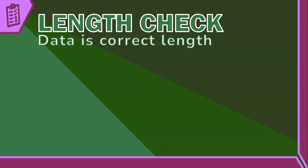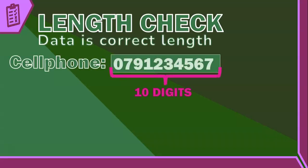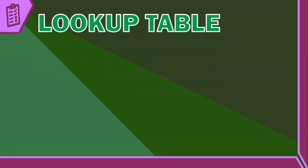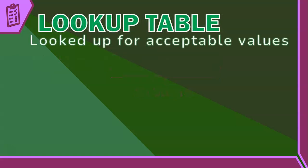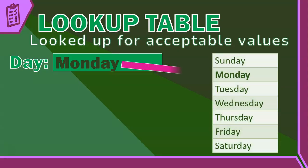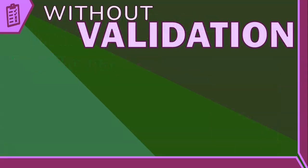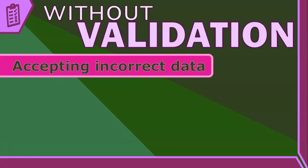Some additional validation techniques include a length check, which checks if the data is the correct length — for example, a cell phone number should be 10 characters long. A lookup table is when the input is looked up in a table of acceptable values to confirm it matches one of the correct options, like listing the name of a day, which can only be one of a fixed list of day names.